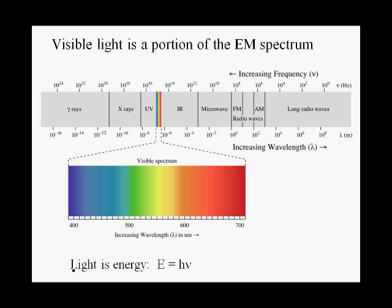We can't really discuss photosynthesis without discussing light as a form of energy. Visible light is a tiny portion of the electromagnetic spectrum, which goes all the way from gamma rays to long radio waves.